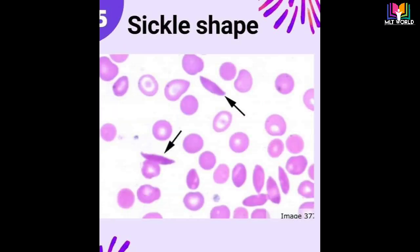Next is sickle-shaped RBC. In this condition we will see RBCs have sickle shape, that's why they are called sickle cells. Sickle cell disease is an inherited disease caused by a defect in a gene. A person will present with sickle cell disease only if two genes are inherited — one from the mother and one from the father. A person who inherits just one gene is healthy and considered to be a carrier.